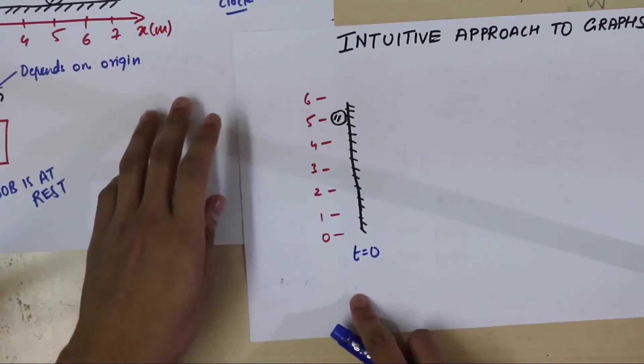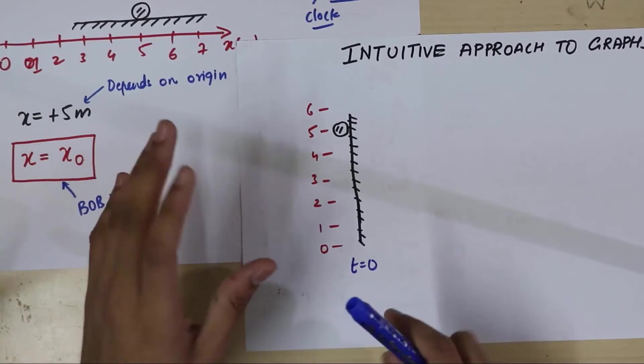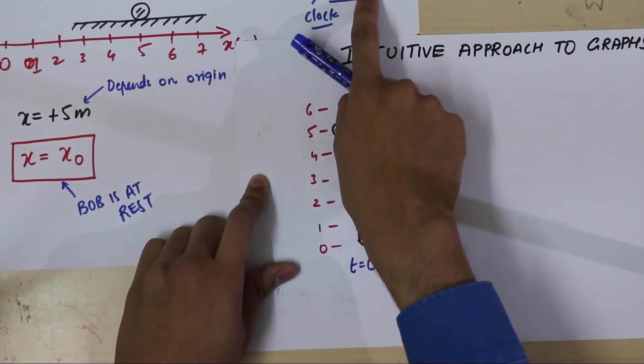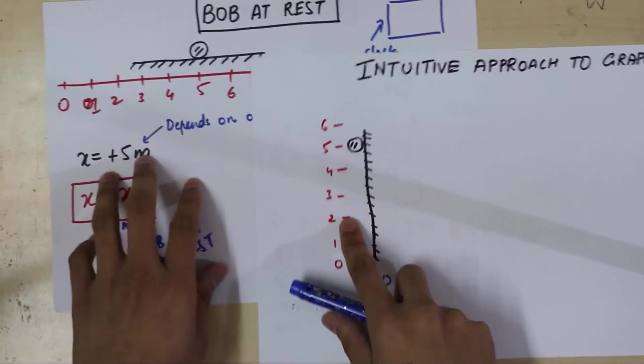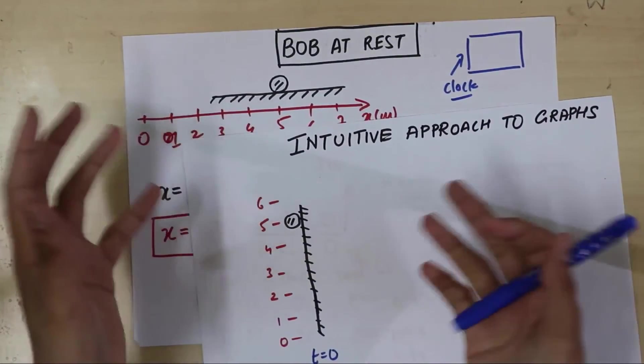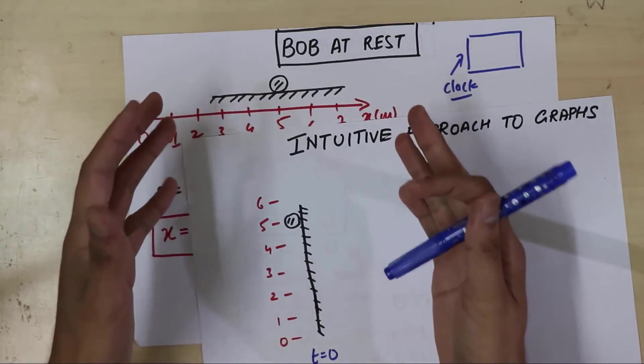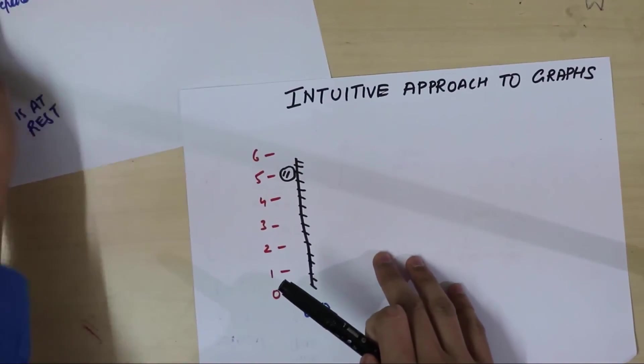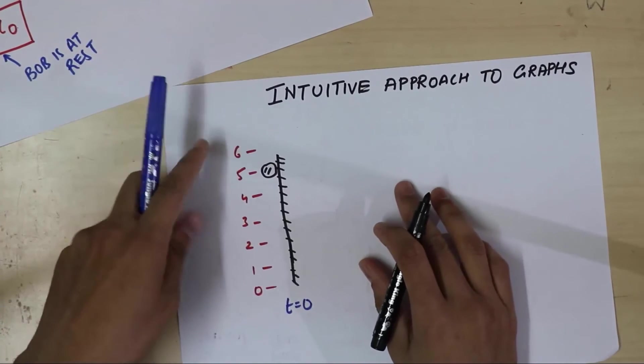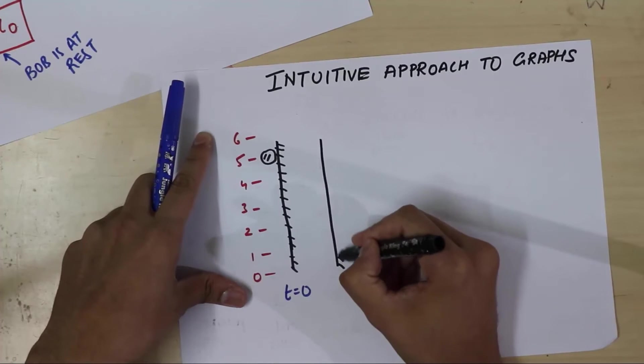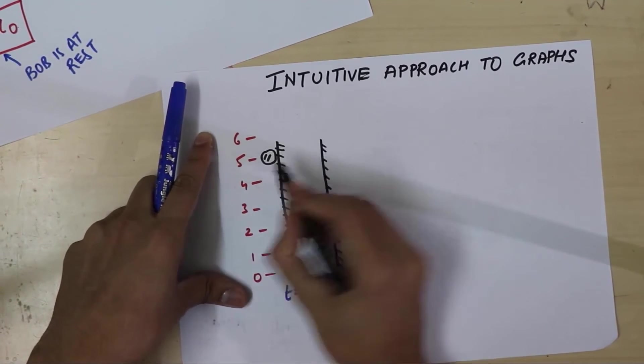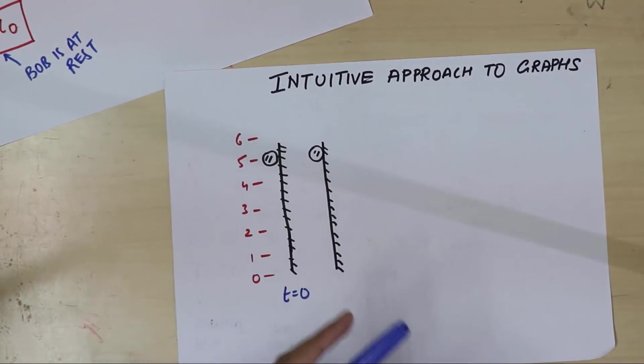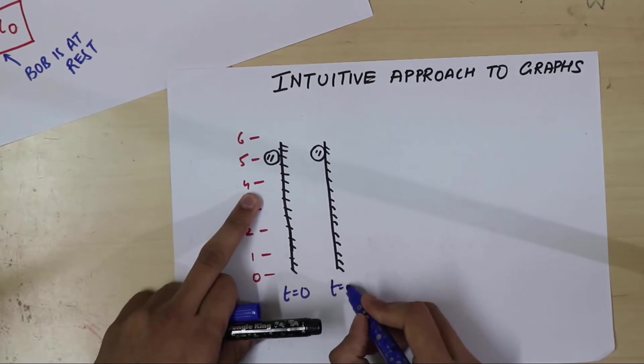Okay, now let the clock tick for, let's say, 2 seconds. And then let's freeze the universe again. So right now the clock is t equal to 2 seconds. And we're going to look at Bob again and see what does Bob look like. Bob, where are you? Well, Bob says I'm still at 5 meters. The snapshot is going to look identical. So what we'll do is we'll redraw this over here. It's going to take us some time, but that's okay. You'll get an intuitive idea of what graphing is. So here it is. And he's still at 5 meters. He's not changed his position one bit. And this is at t equal to 2 seconds.